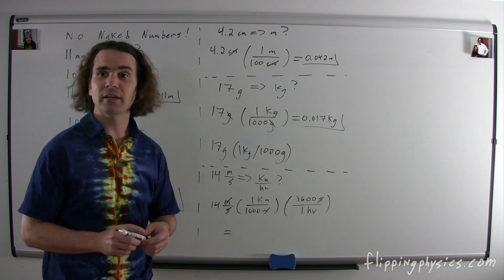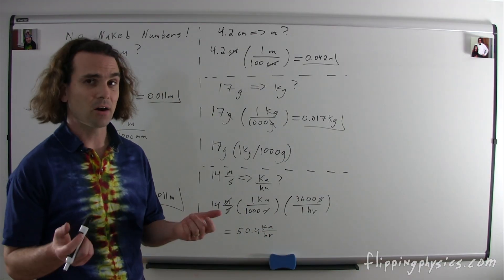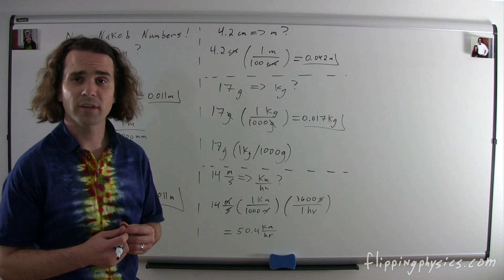So, what do we get for an answer? 50.4 kilometers per hour. So, Bobby, our answer is 50.4 kilometers per hour? Yeah, that's what my calculator says. It's 50.4 kilometers per hour. Okay, 50.4 kilometers per hour.